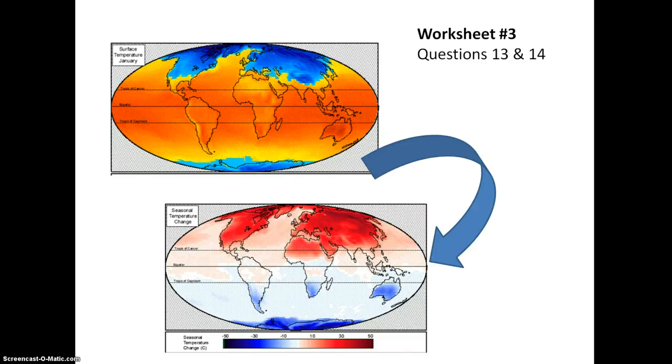If we read the color scale, we notice that the red indicates a positive change. So, areas that are red have a higher temperature in July than in January. The areas that are blue have a negative value. So, these places are cooler in July than in January.